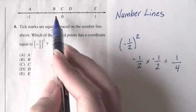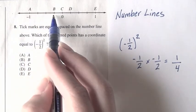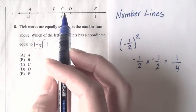We're looking for positive 1 fourth, so we're not concerned with A or B. It's certainly not 0, so we're not concerned with C.